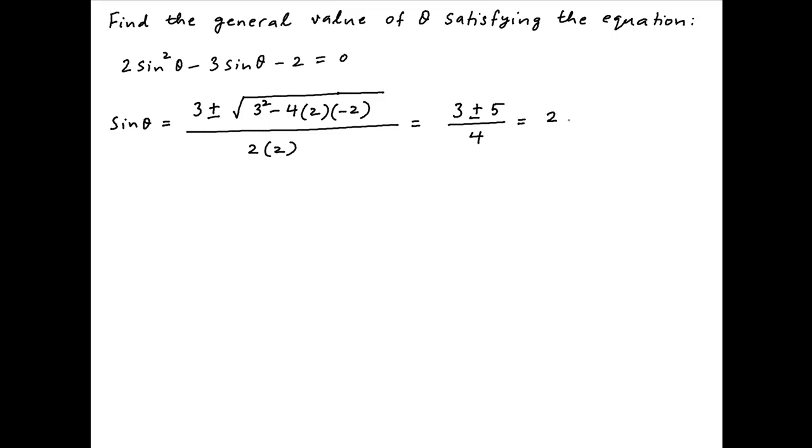This simplifies to 3 plus minus 5 upon 4. Therefore, possible values of sin θ are 2 and minus half.